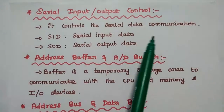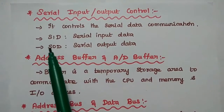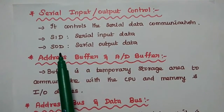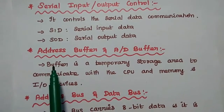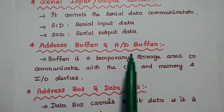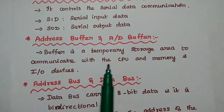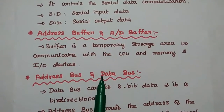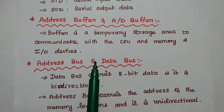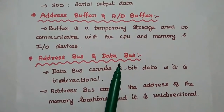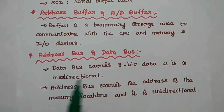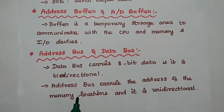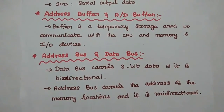The serial input-output control unit manages serial data communication using two signals: serial input data (SID) and serial output data (SOD). The address buffer and address-data buffer are temporary storage areas for communication between the CPU, memory, and I/O devices. The data bus carries 8-bit data and is bidirectional, while the address bus carries memory location addresses and is unidirectional.